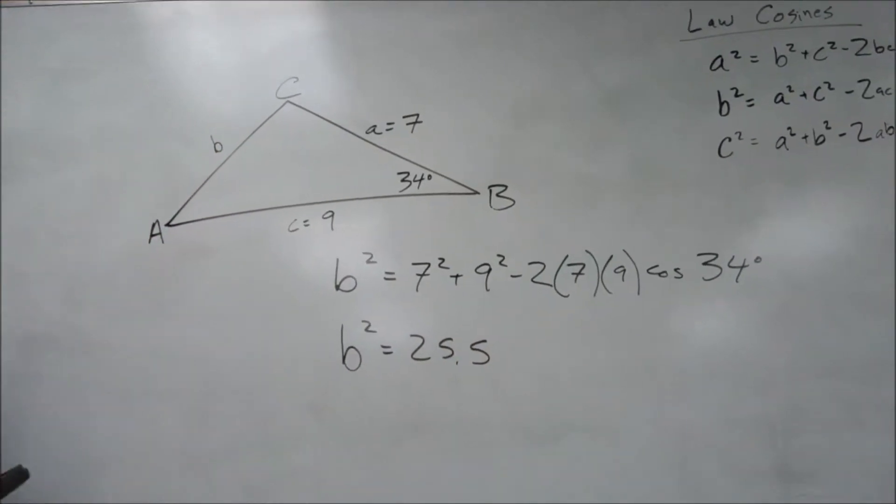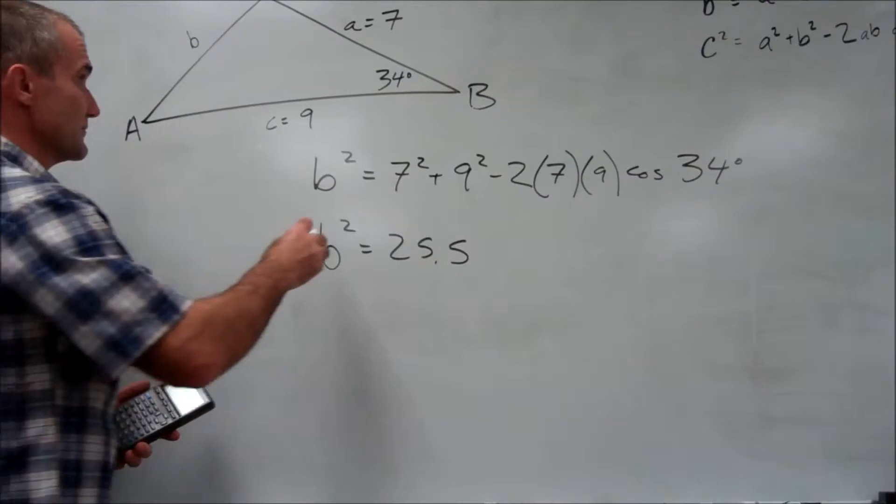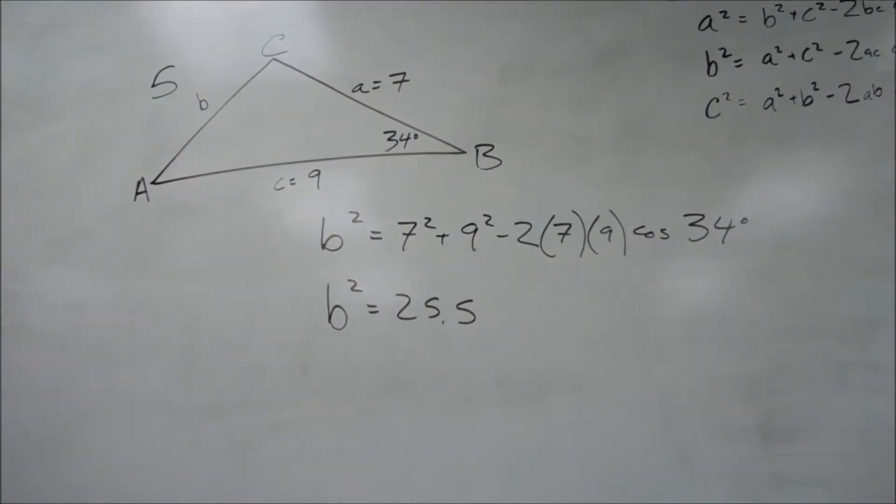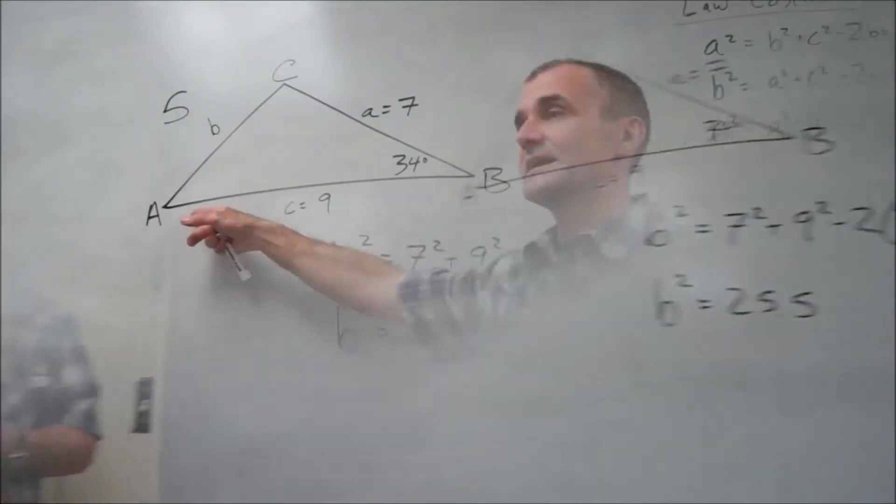Square root of both sides. And I get B is equal to 5. That's how easy it is to find a fourth piece of a non-right triangle.